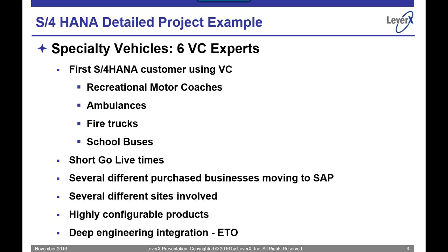These are all different types of configurations that have to be built into these vehicles. Other vehicles they create are fire trucks. Each city, I just found out, has a different type of unique, pretty much engineering-to-order requirement for a fire truck: the length of the ladder, the width of the vehicle, the type of tires, the powertrain, the communications equipment, the seating equipment — it's hundreds of thousands of combinations of things uniquely required to build these vehicles.